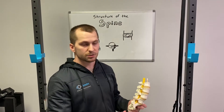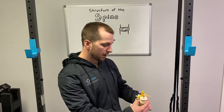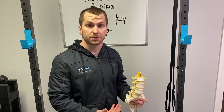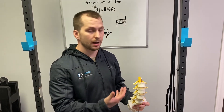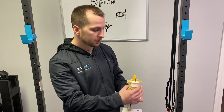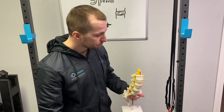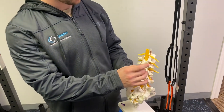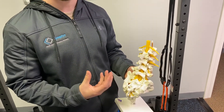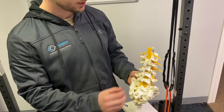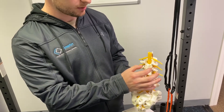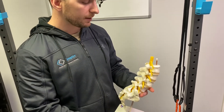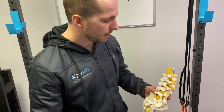Moving on to the lumbar spine - the vertebral bodies here are the largest of any region of the spine, because as you get lower there is a lot more load being distributed onto this portion, so you need thicker bodies to withstand that. The posterior processes are still present as described before. It's worth noting that in the lumbar spine, because of all the stabilization that needs to take place, there are a few more small bony processes where a lot of the supporting musculature attaches.